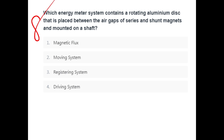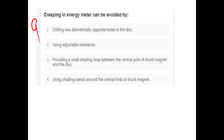Which energy meter system contains a rotating aluminum disc placed between the air gap of series and shunt magnets, mounted on a shaft? This is the Moving System. The Moving System consists of the rotating aluminum disc. The creeping in an energy meter can be avoided by drilling two diametrically opposite holes in the disc.